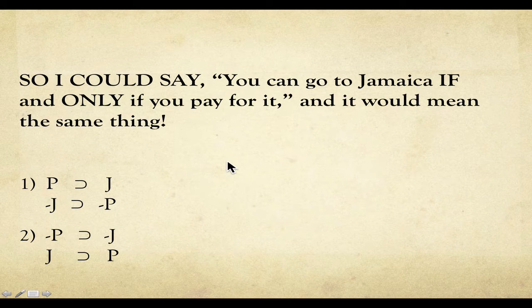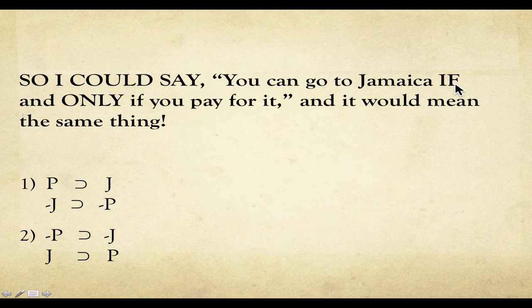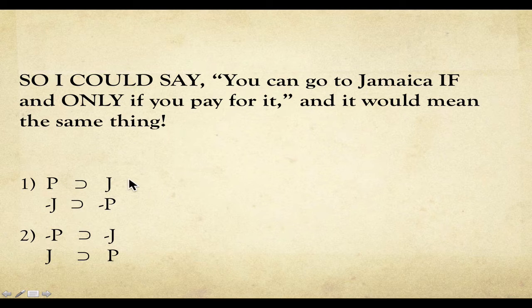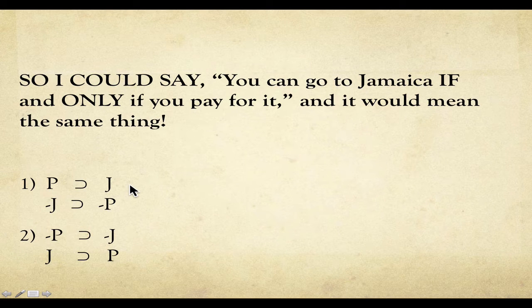So 'if and only if' just means that paying for it is both the 'if' (left side) and the 'then' (only means then, right side), with Jamaica being on the opposite side of wherever paying for it is. They're both on opposite sides of each other. And then we contrapose them both.